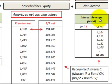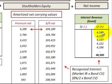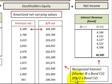The interest revenue is what we recognize each period for those bond payments we receive. This is based on the market rate of interest times the bond's carrying value. The market rate is 8% per year, divided by two, giving 4% per period. This varies each period based on the market rate and the bond's carrying value.